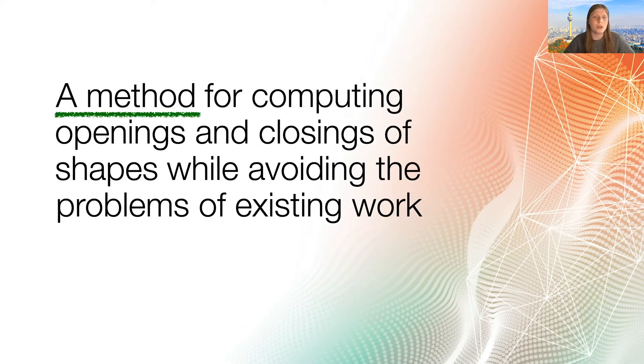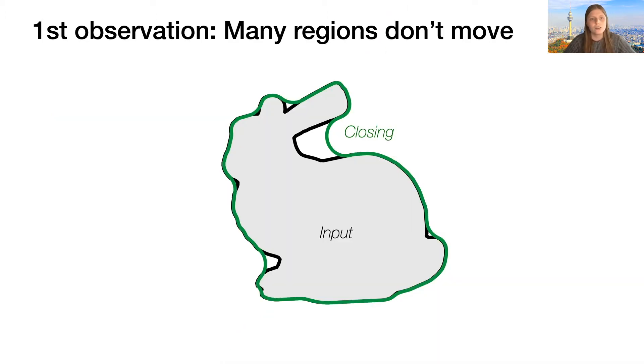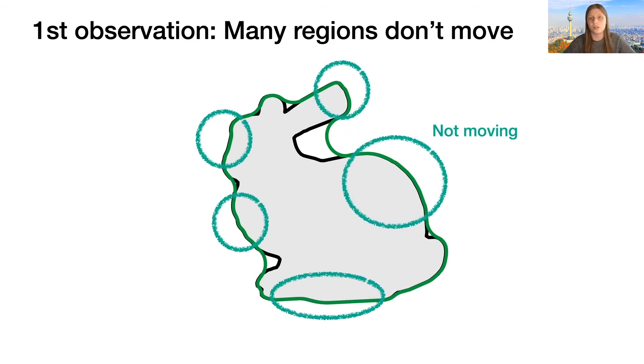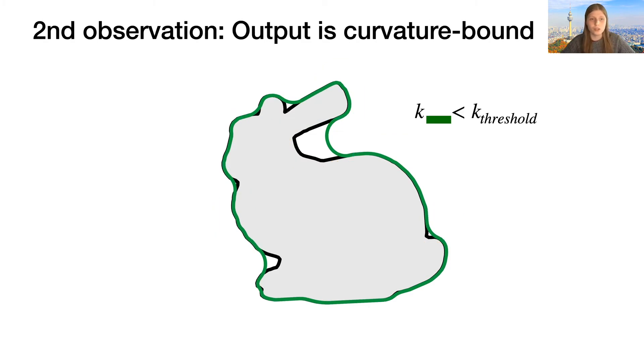We will now build our method and show you how we completely avoid these pitfalls. Our first key observation, which we kind of hinted at already, is that there are many regions of the shape that are identical for the input and the closing, while only some others move. Our second observation is that the output green closing curve has a bounded curvature.